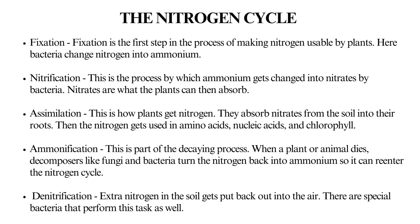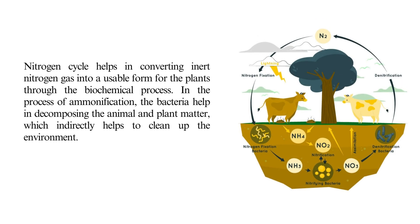Ammonification is part of the decaying process — when a plant or animal dies, decomposers like fungi and bacteria turn the nitrogen back into ammonium so it can re-enter the nitrogen cycle. Denitrification: extra nitrogen in the soil gets put back out into the air by special bacteria. The nitrogen cycle helps in converting inert nitrogen gas into a usable form for plants through biochemical processes.